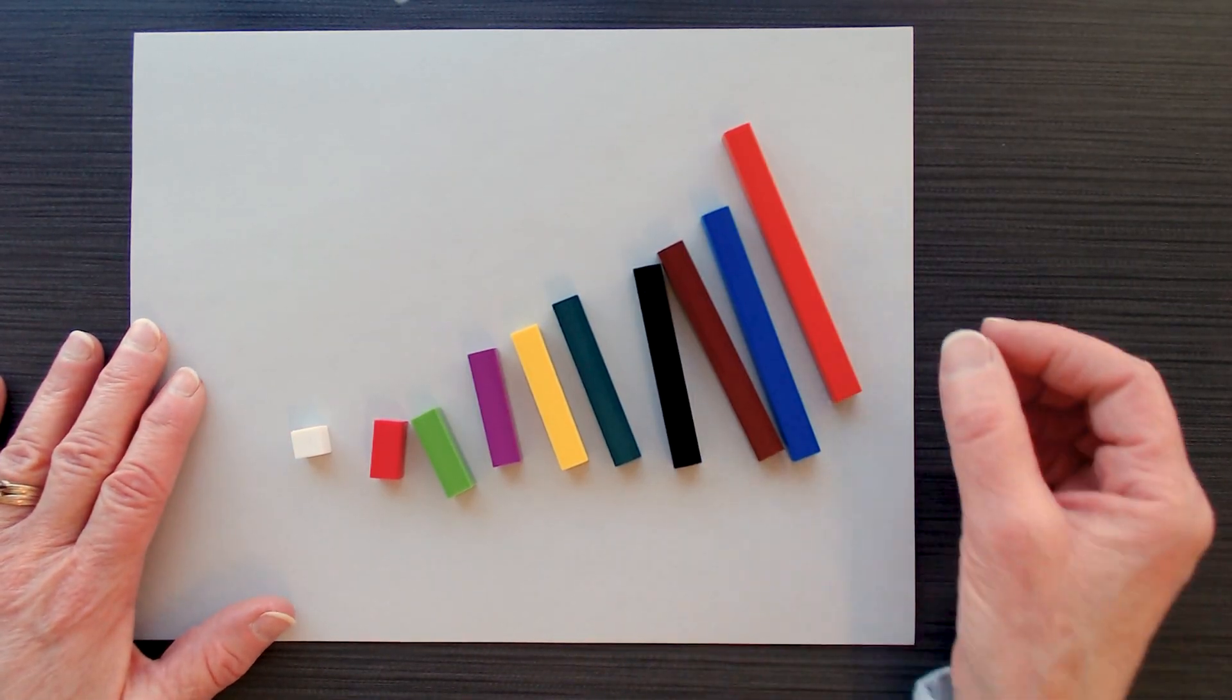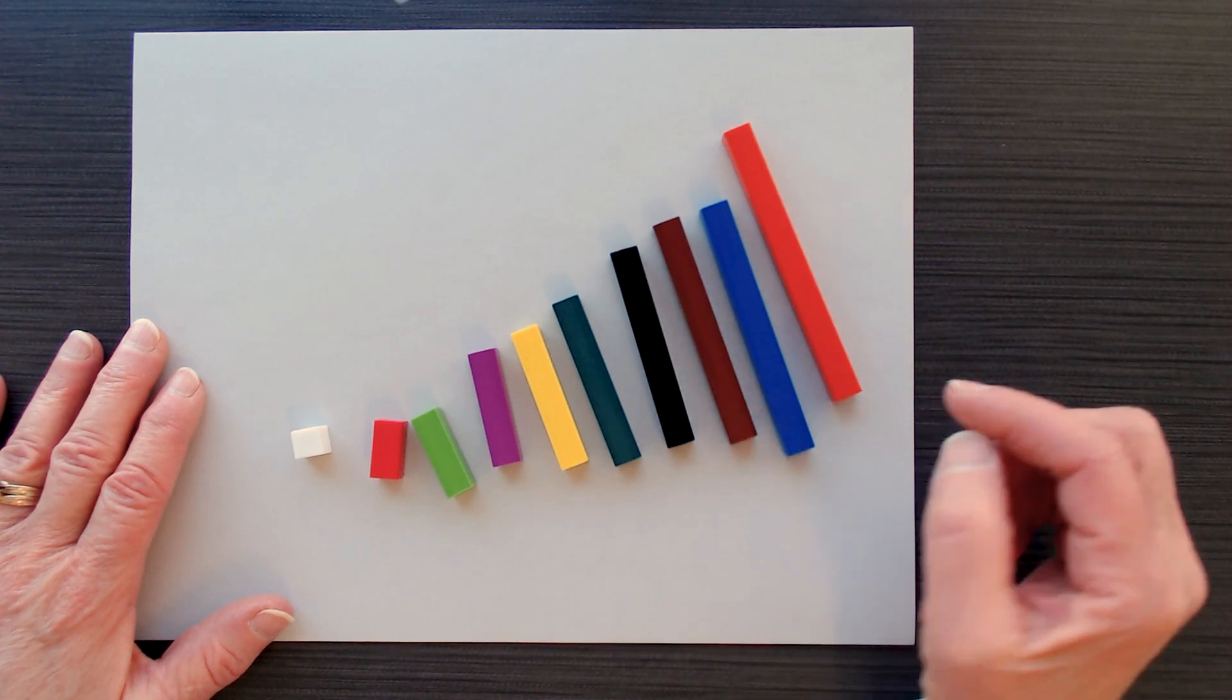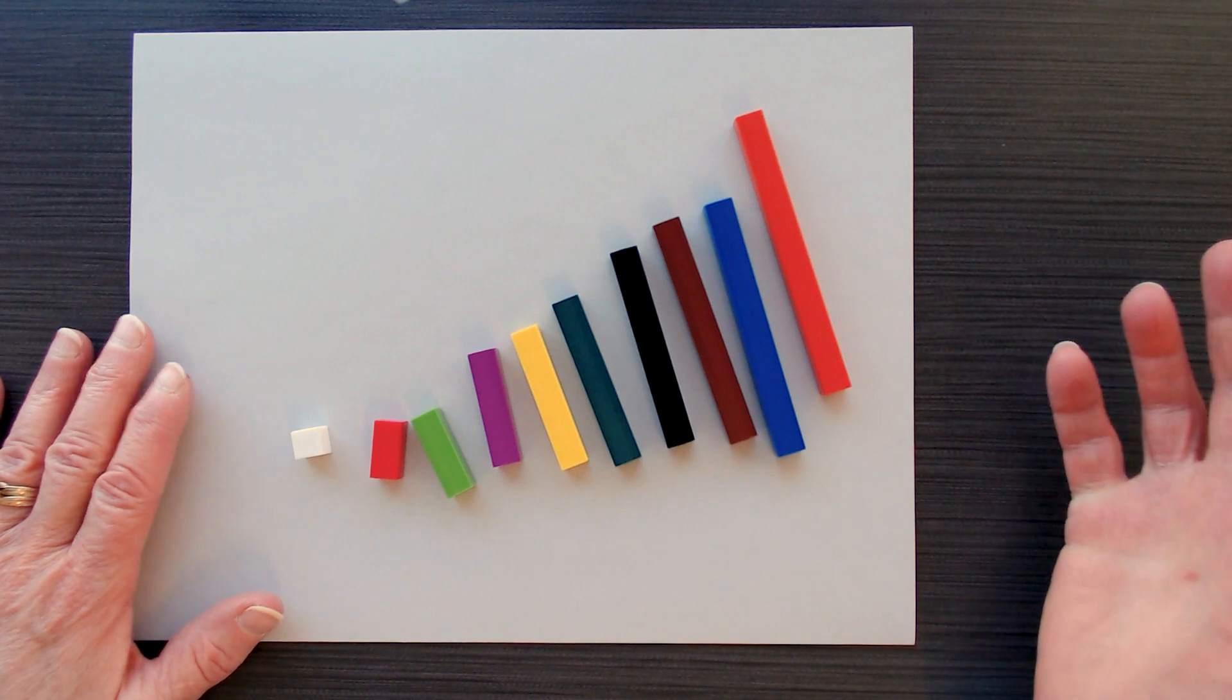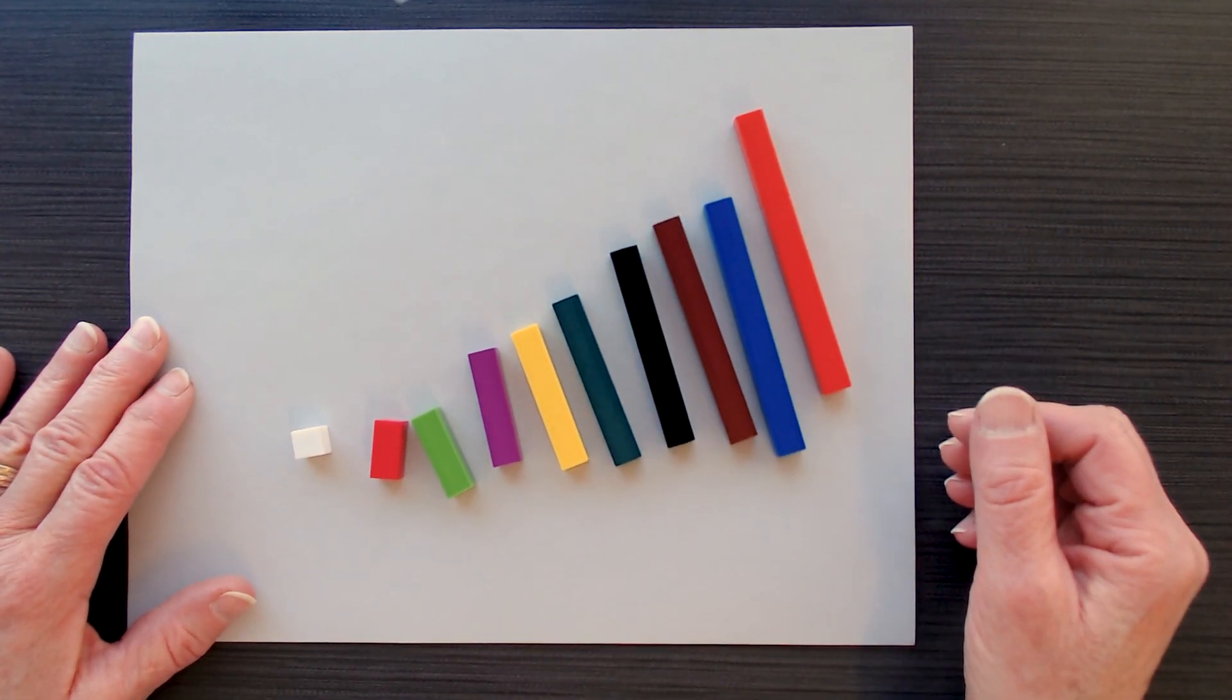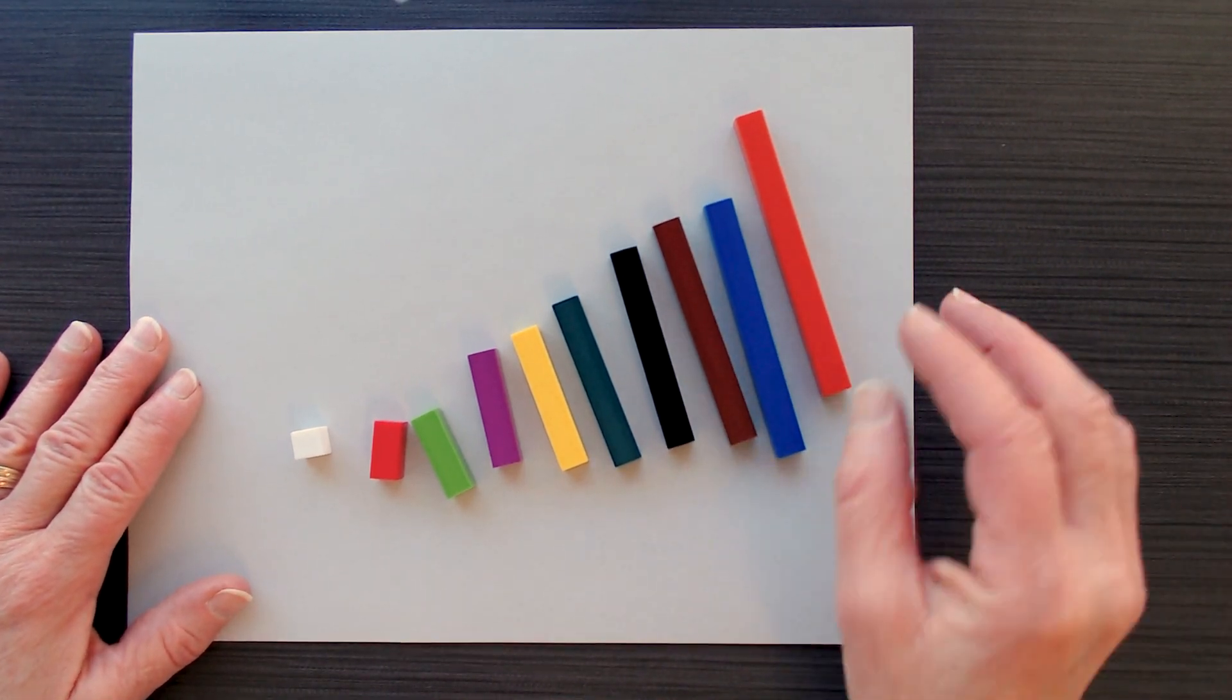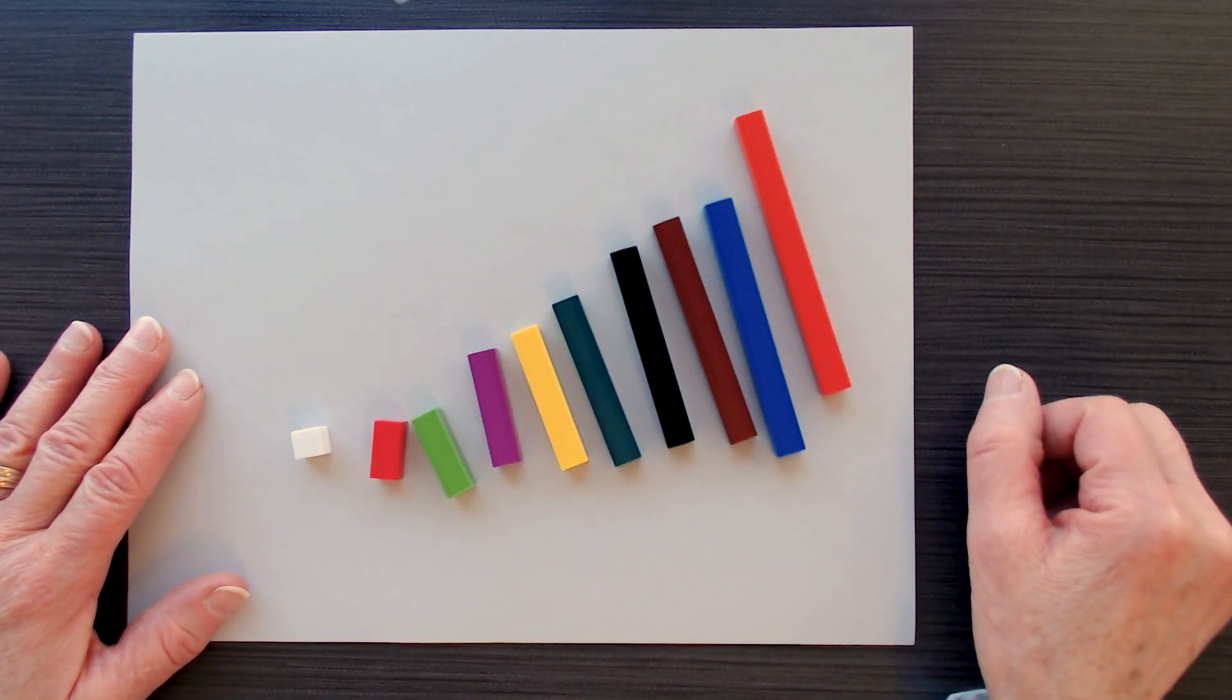These are Cuisenaire rods. We can use them for a variety of things in mathematics, but one of the things that we can do with them is represent addition. Now in this case we want to represent addition of decimal numbers. So in order to do that we have to assign a value to the rods.